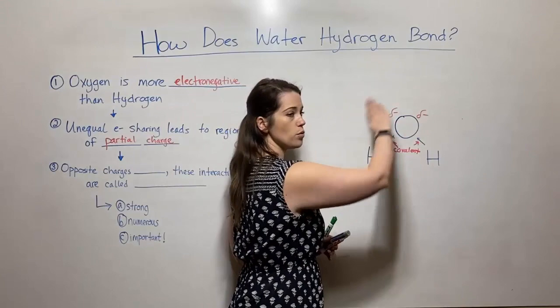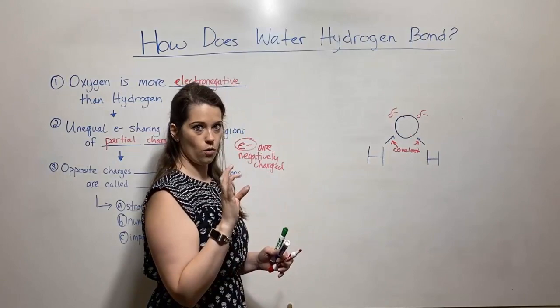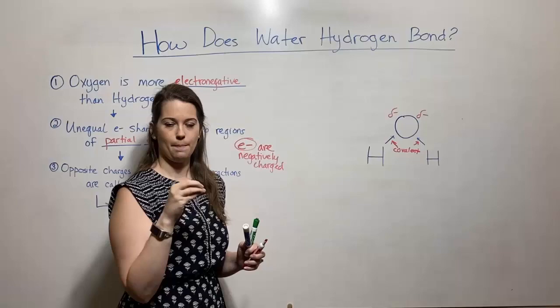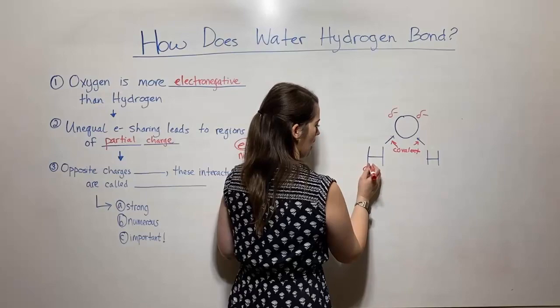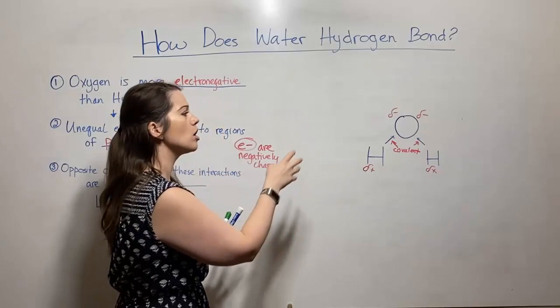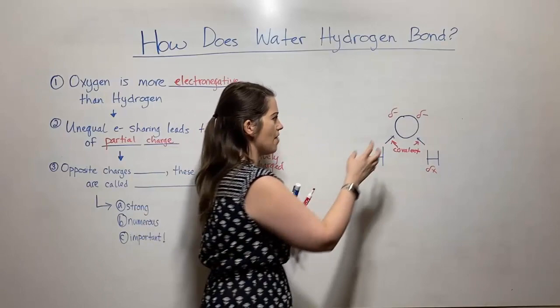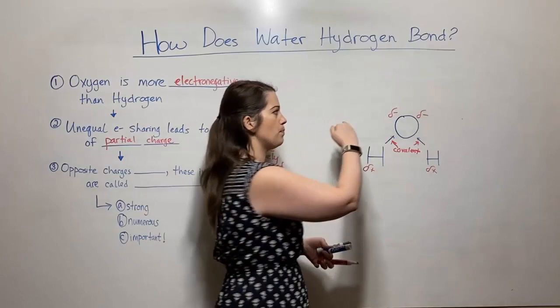So even though this is a neutral molecule, there's a partial negative charge in the region where the oxygen is. This symbol — the lowercase Greek letter delta — is what we use to indicate partial charge. It's not a full negative charge, just a partial negative. Likewise, the hydrogens have a partial positive charge. This all goes back to oxygen being so much more electronegative, tugging on those electrons more strongly than hydrogen does. That results in this charge separation: even though water is a neutral molecule, part of it is partially negative and part is partially positive.